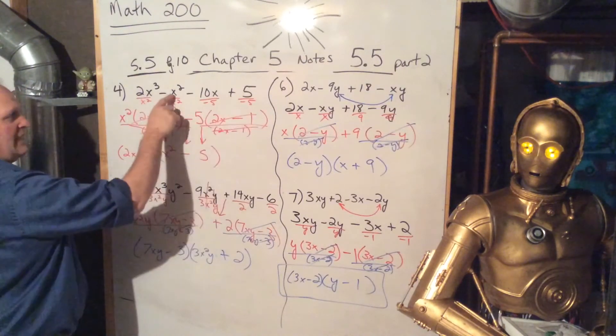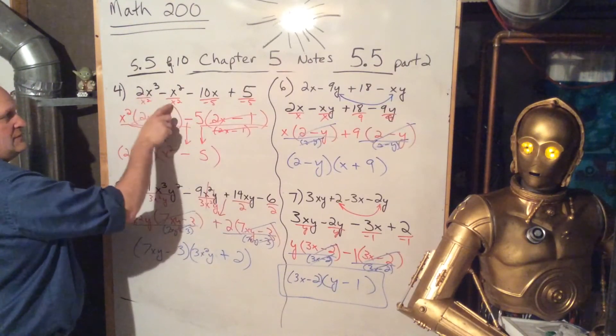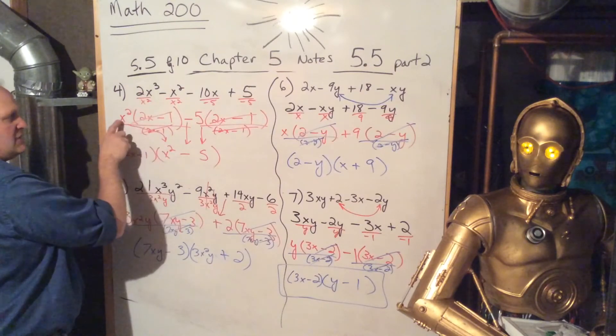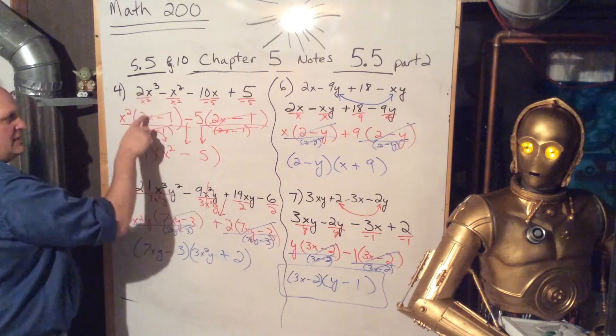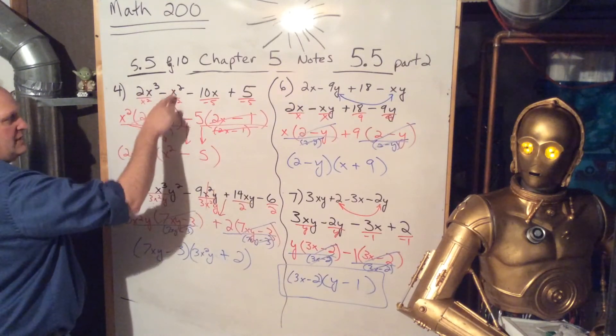It's factored by grouping, so we factor out from the first two terms, we factor out the greatest common factor is x squared. You write it down here, and you divide it under each term. You reduce it, and you get 2x. I reduce it, I get 1.